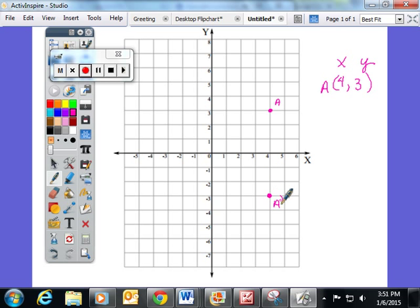I labeled it A prime, or apostrophe. We talked about what A prime's location is. If we start at the origin, it's over four still, but now it's down to negative three.